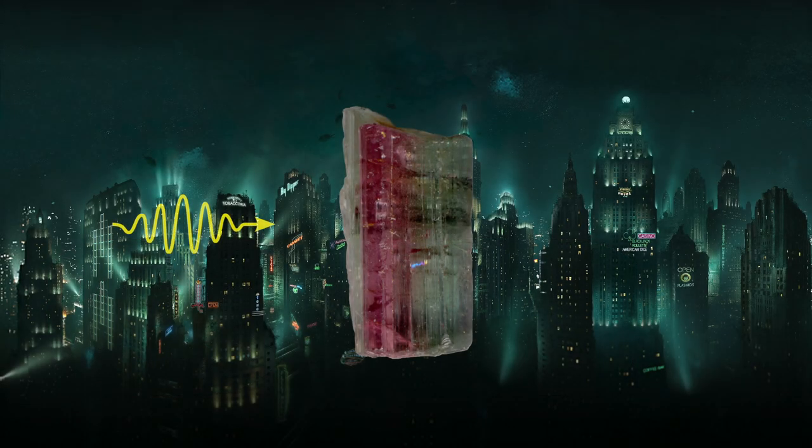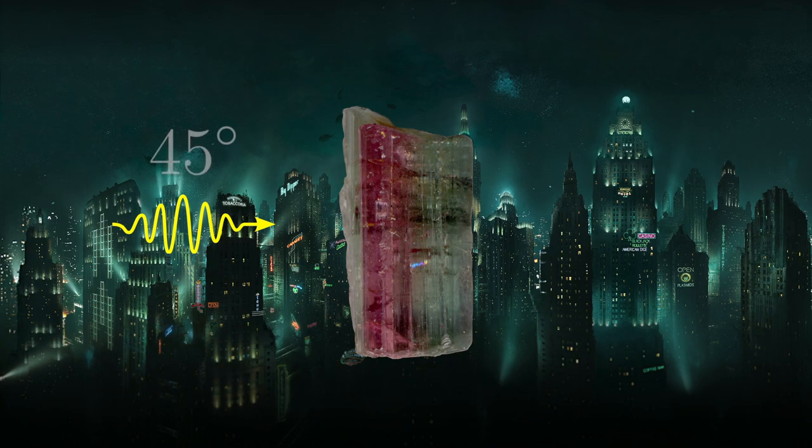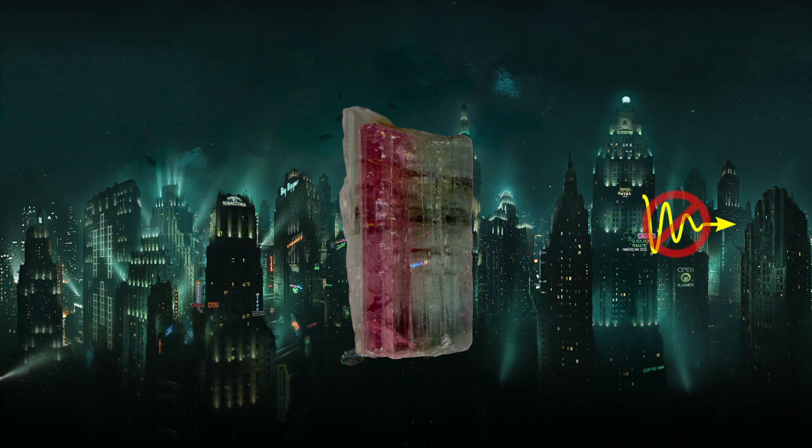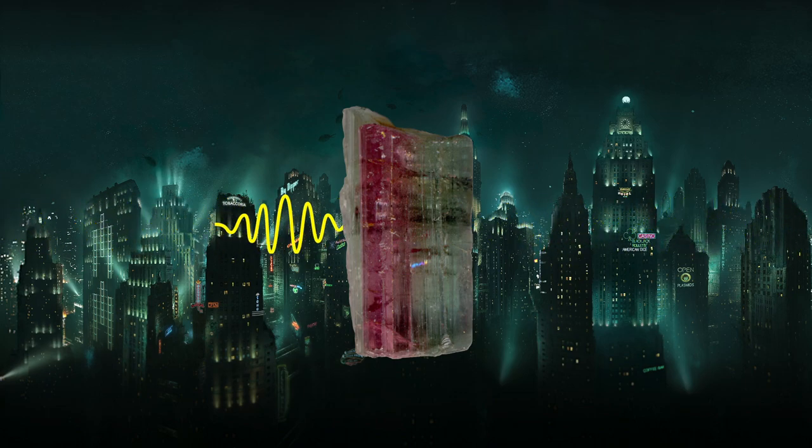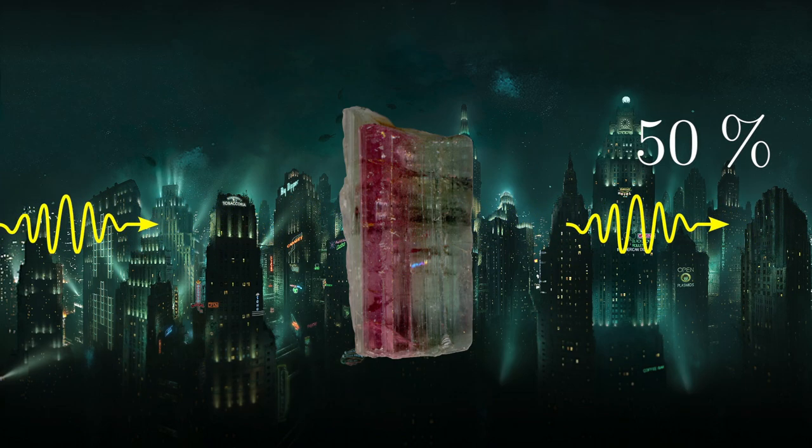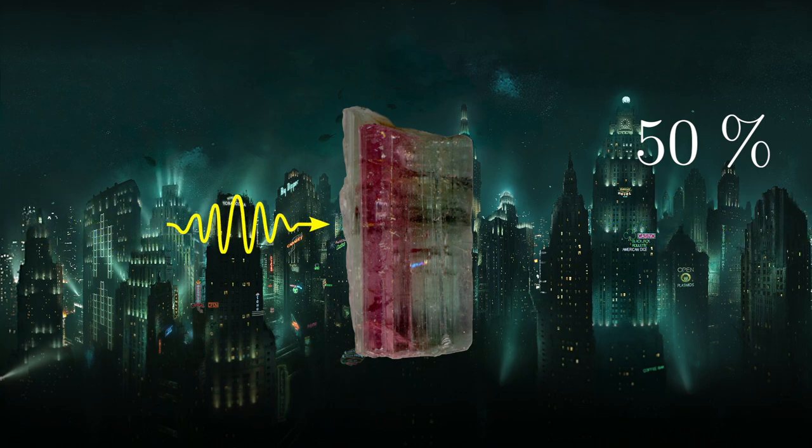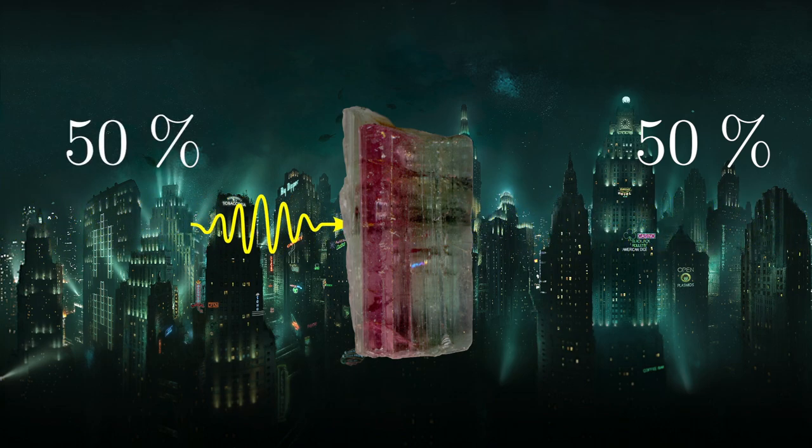But, let's consider a single photon, polarized right in between horizontal and vertical polarization. The tourmaline crystal cannot let through half a photon, that is not physically possible. So, from experiments we can conclude that the photon is let through half of the times the experiment is carried out. Once a photon is fired from the light source towards the tourmaline crystal, there is a 50% chance it will end up on the other side and a 50% chance it will be blocked.